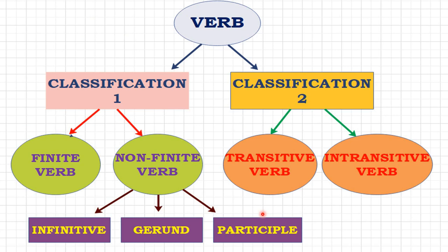Now, the types of verbs. There are two ways of classifying verbs. Classification one: either you call it a finite verb or a non-finite verb. Non-finite verbs are of three types: infinitive, gerund, and participle. The second way of classifying is transitive verb and intransitive verb. We shall first see transitive and intransitive, then move on to finite and non-finite verbs.